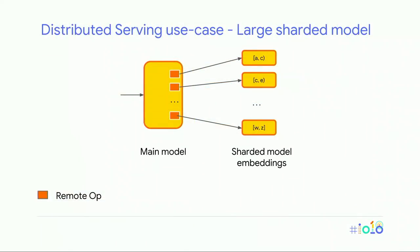Another use case is large sharded models. In deep learning, we embed things like words or YouTube video IDs as vectors of numbers. If you have a lot of words or videos, that data won't fit on one machine. We use a system like this to split those embeddings into shards and distribute them, and the main model can reach out to get what it needs and then do the computation.